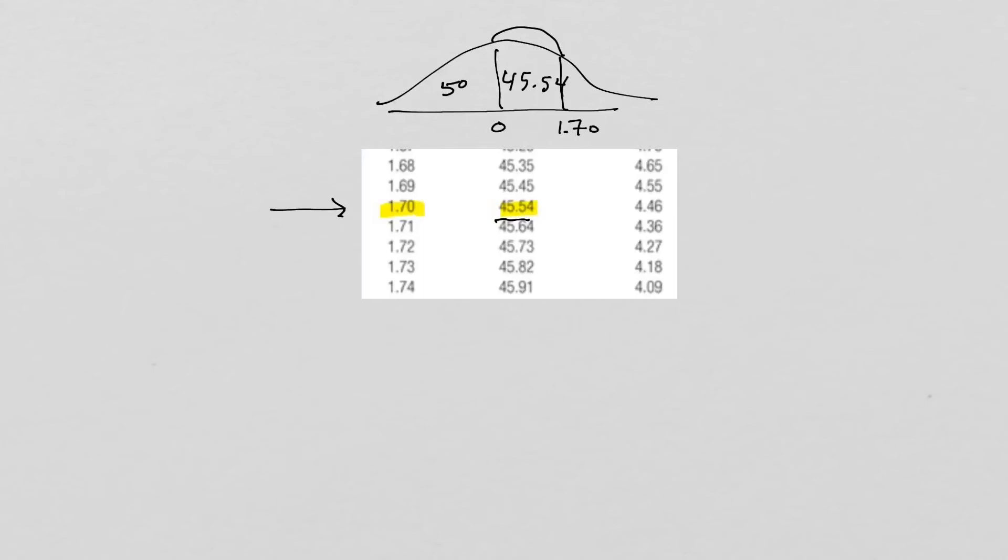We know that there's 50% below the mean, so we have to add both those up. That means that our percentile for our student is at the 95.54 percentile.